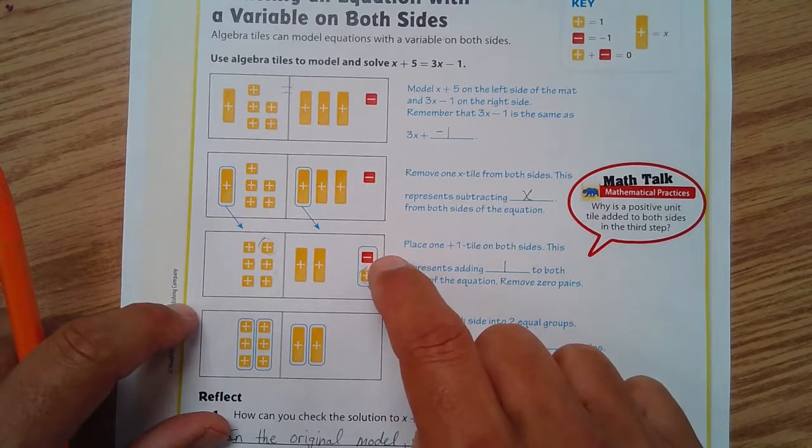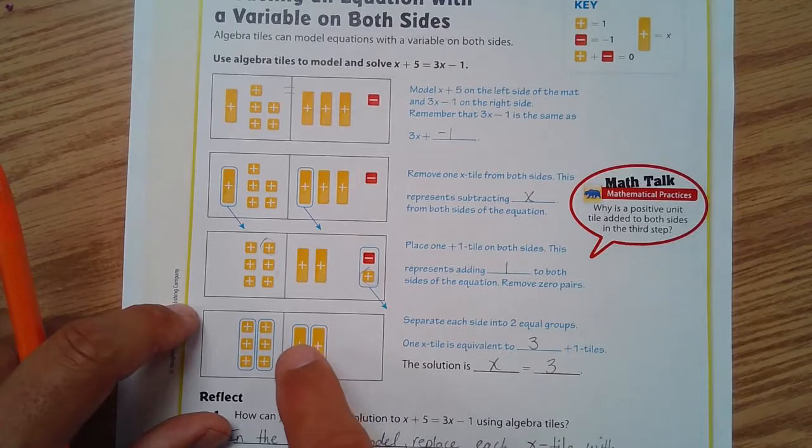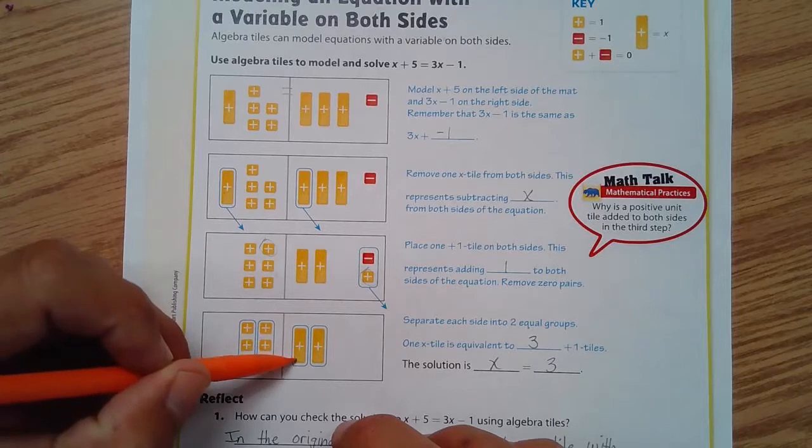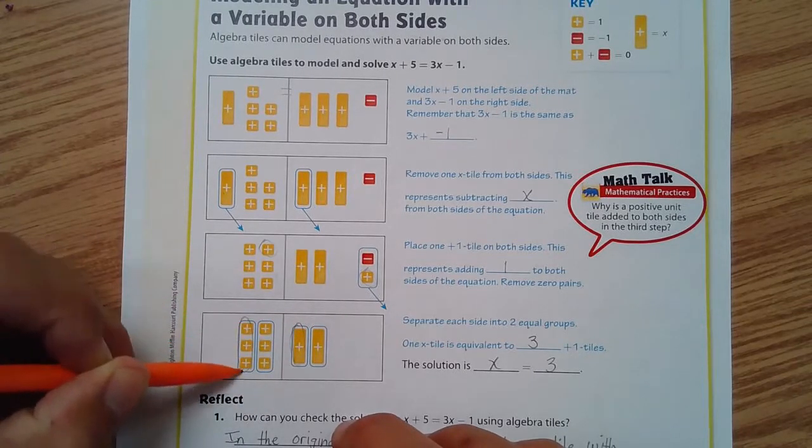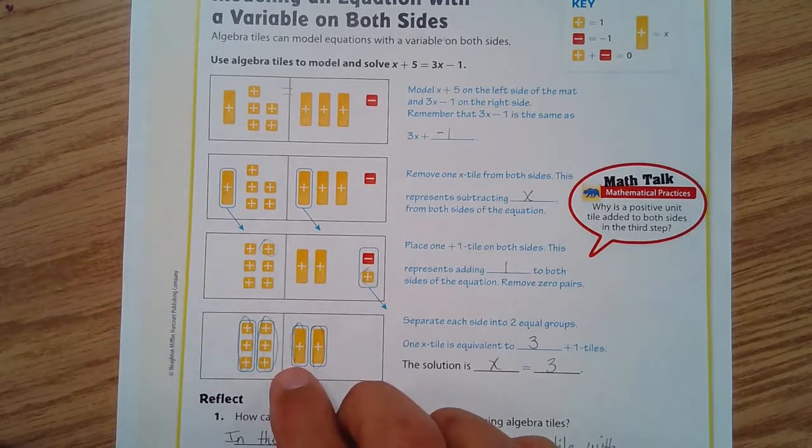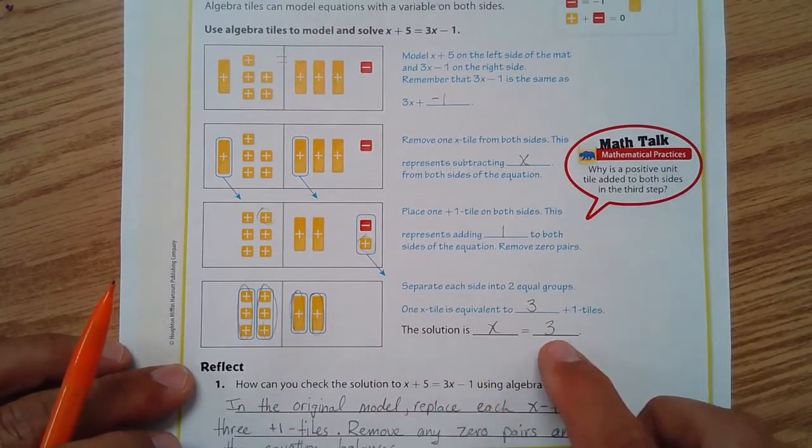Now this counts as a zero pair—that's eliminated. All along the way we're trying to figure out what is the value of one of these. We can divide, and this x equates to 3. That means one of the x's equals 3 positives. Here we see the solution is x equals 3.